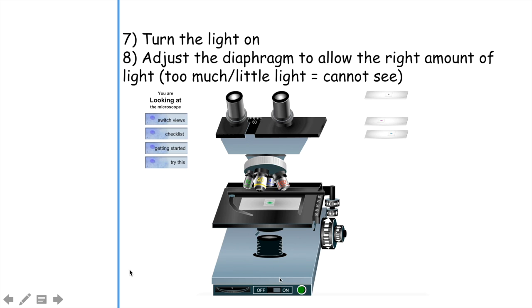The next step is you want to turn the light on. The switch might be in the front, on the side, or on the back. Just look for it and turn it on. After you turn it on, notice that you need to adjust the diaphragm. The diaphragm is located underneath the stage so it can allow the right amount of light to enter through this hole to shine through the specimen so you can actually see it in the microscope.